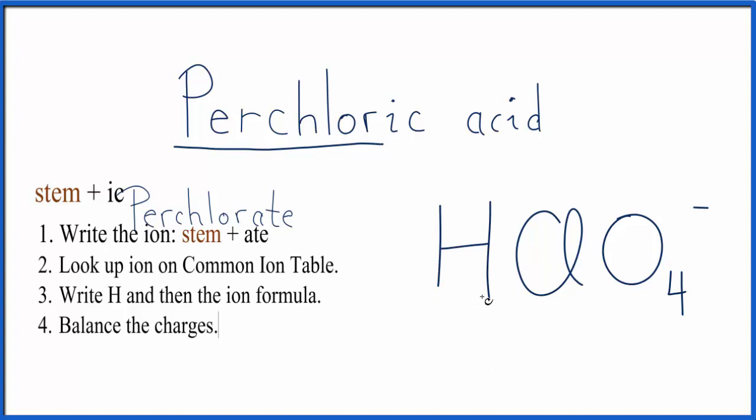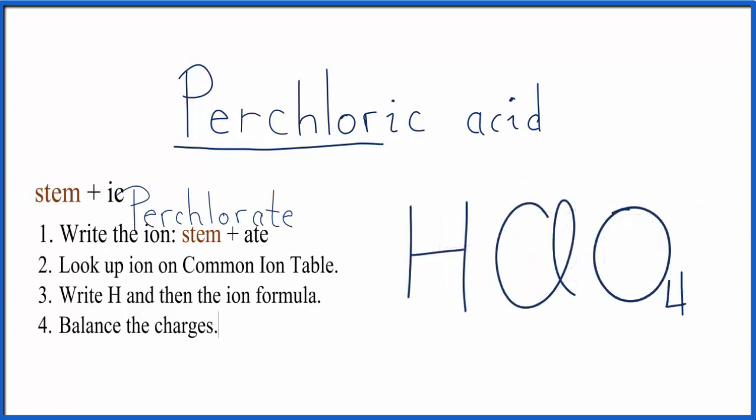Now we need to balance our charges. Hydrogen always has a plus charge, and we can see that our chlorate ion has a negative charge, and that applies to the whole polyatomic ion. The plus and the minus, they're going to cancel out, and that makes HClO4, the formula for perchloric acid.